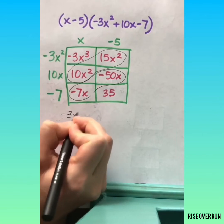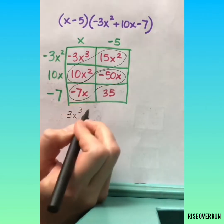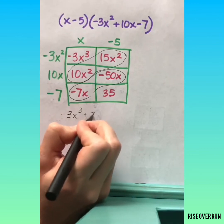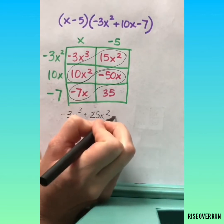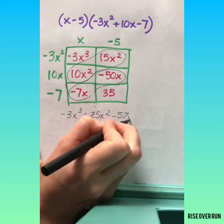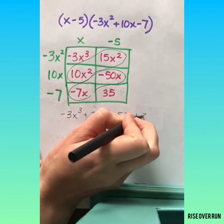So we have negative 3X cubed. 10X squared and 15X squared combined to give me 25X squared. Negative 7X and negative 50X. Negative 57X. And then we have plus 35.